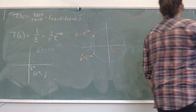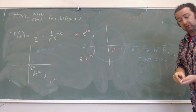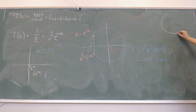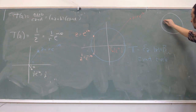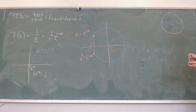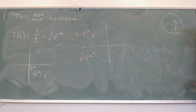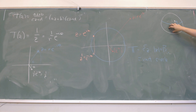On the Riemann sphere, what's happening is that there's a circle on the sphere corresponding to the unit circle, and applying 1/z is equivalent to flipping the top and bottom caps of the sphere — taking a point on the bottom half and lifting it to the top half, and vice versa.